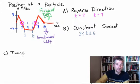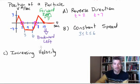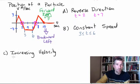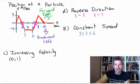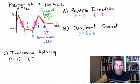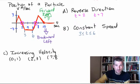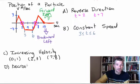What about part c — where are we increasing velocity? We're increasing our velocity from t=0 to t=1. Then we slow down, then we speed up in reverse — increasing our velocity in a backwards direction — from t=2 to t=3. Then we're constant, then we slow down, then we speed up again from t=7 to t=8. So those are the intervals where we would have increasing velocity.